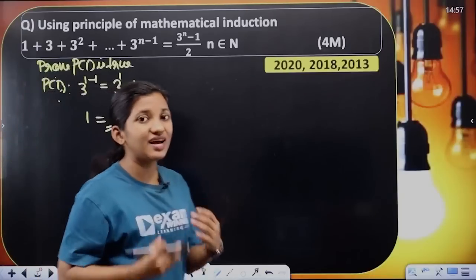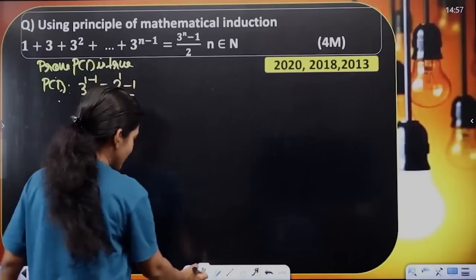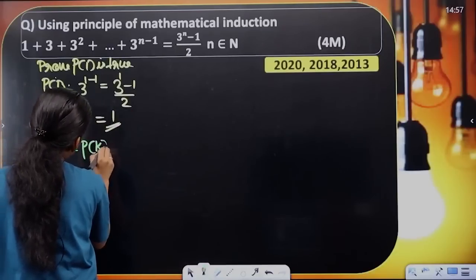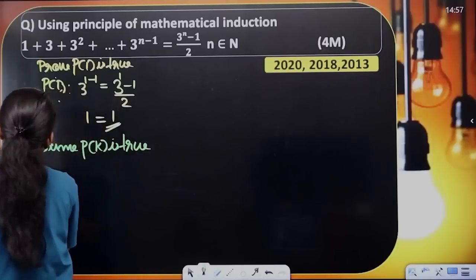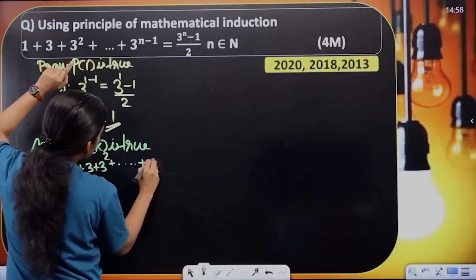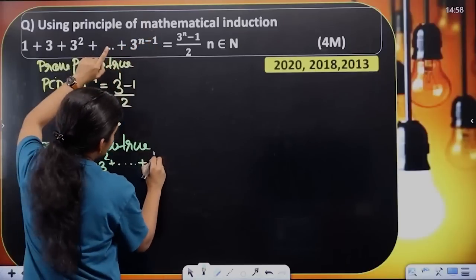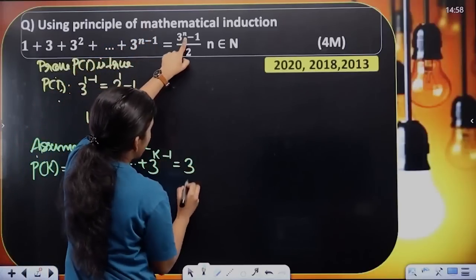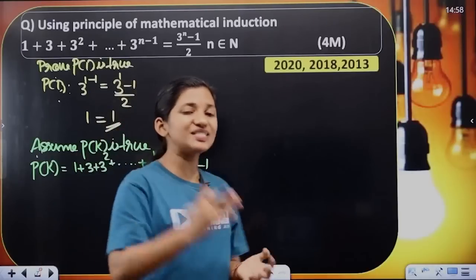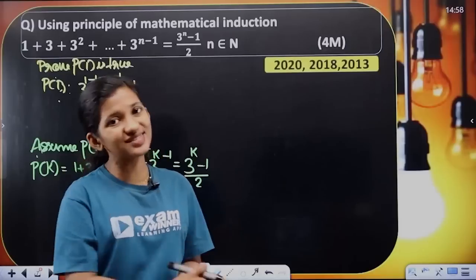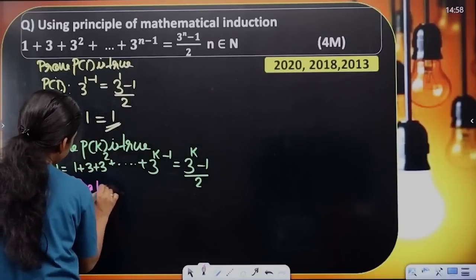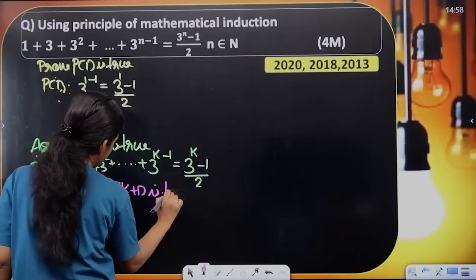P of 1 is true. Assume P of k is true. Second step: assume P of k is true. P of k equals 1 plus 3 plus 3 squared plus etc. up to 3 raised to k minus 1 equals 3 raised to k minus 1 by 2. So P of k is assumed true. Then we will prove P of k plus 1 is true. Third step: prove P of k plus 1 is true.